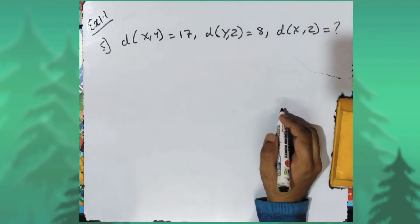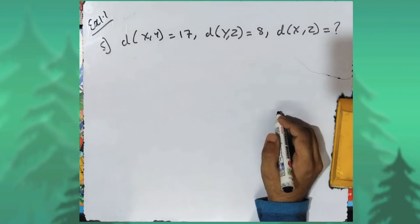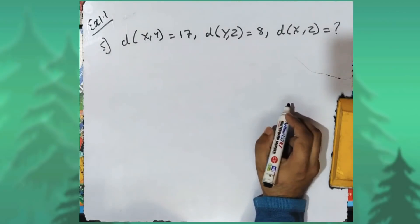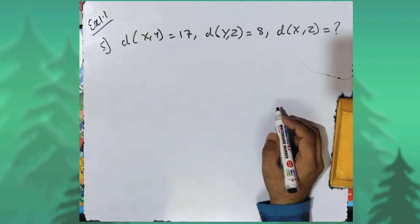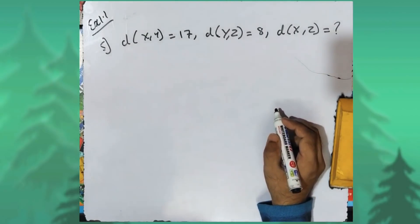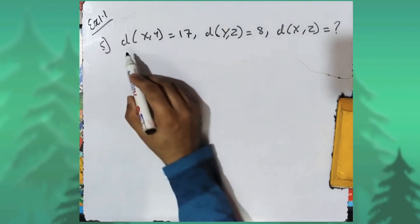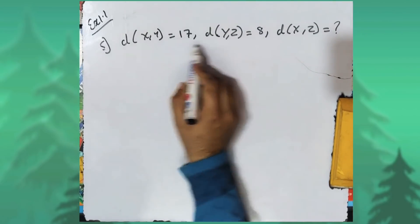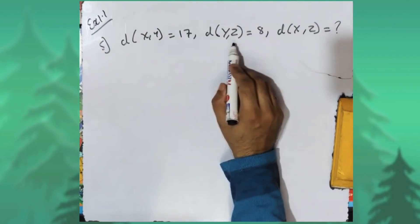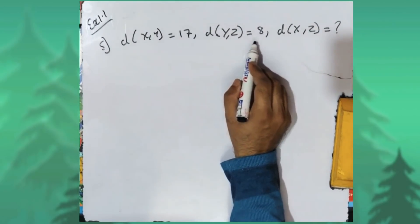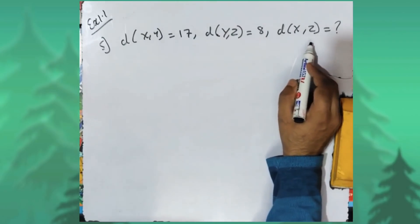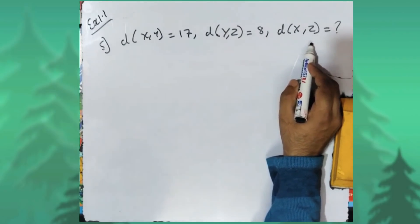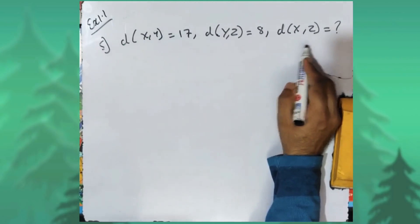In sum number five, three collinear points X, Y, and Z are given. Distance XY is given as seventeen, distance YZ is given as eight, and we are supposed to find distance XZ using all the possibilities.